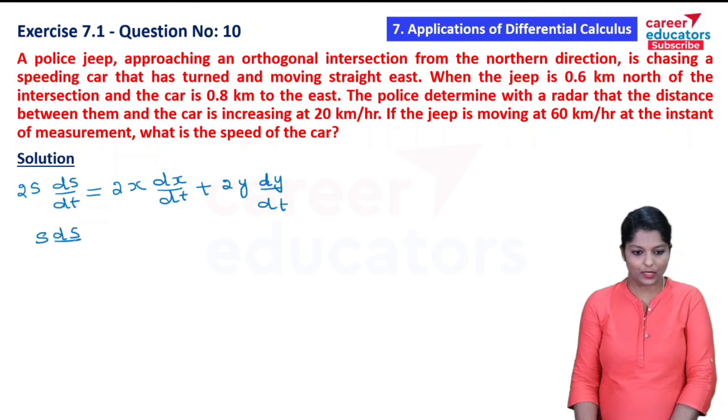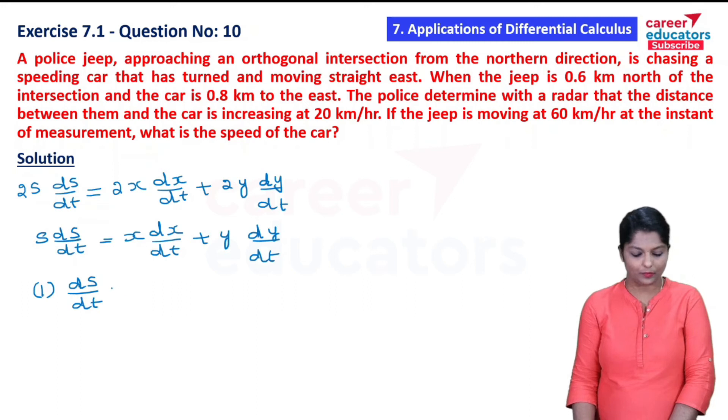Differentiating: 2S ds by dt equal to 2x dx by dt plus 2y dy by dt. Dividing by 2: S ds by dt equal to x dx by dt plus y dy by dt. Now substitute all the values into this equation.